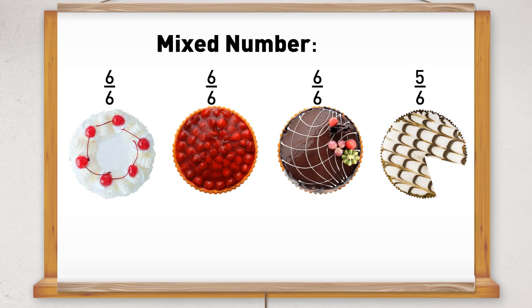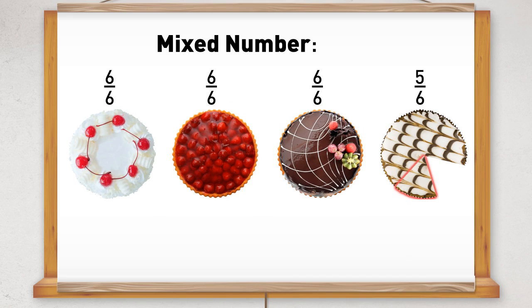1, 2, 3 whole cakes and the fraction part is 1, 2, 3, 4, 5 sixths. So as a mixed number it is 3 and 5 sixths.